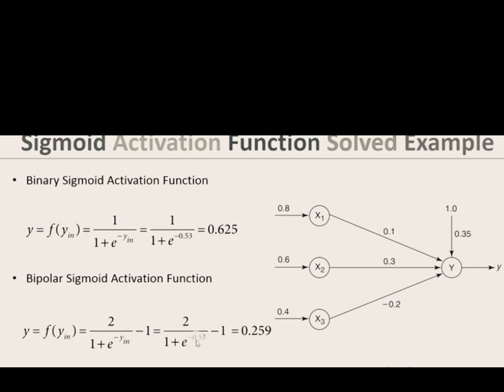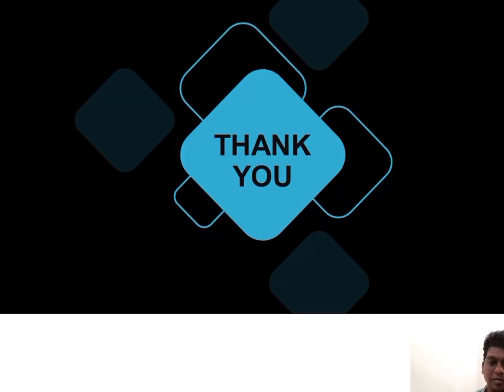Similarly for bipolar sigmoid activation function the formula is given by 2 divided by 1 plus e to the power of minus y_in. So we will substitute that y_in value, get 0.259. This is for sigmoid activation function for binary and bipolar: 0.625 and 0.259. Thank you for watching the video. Meet you in the next video. Till then it's goodbye.